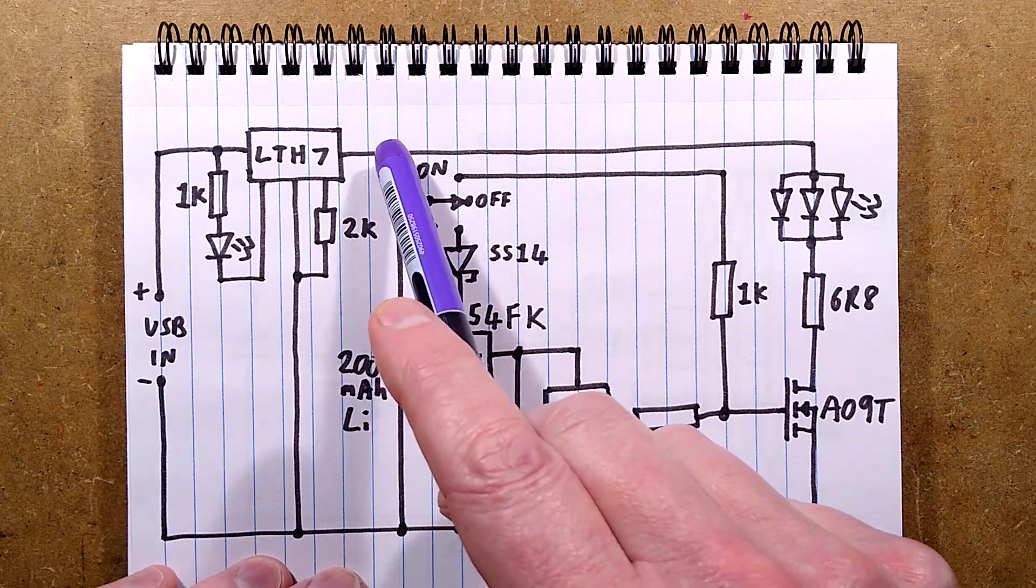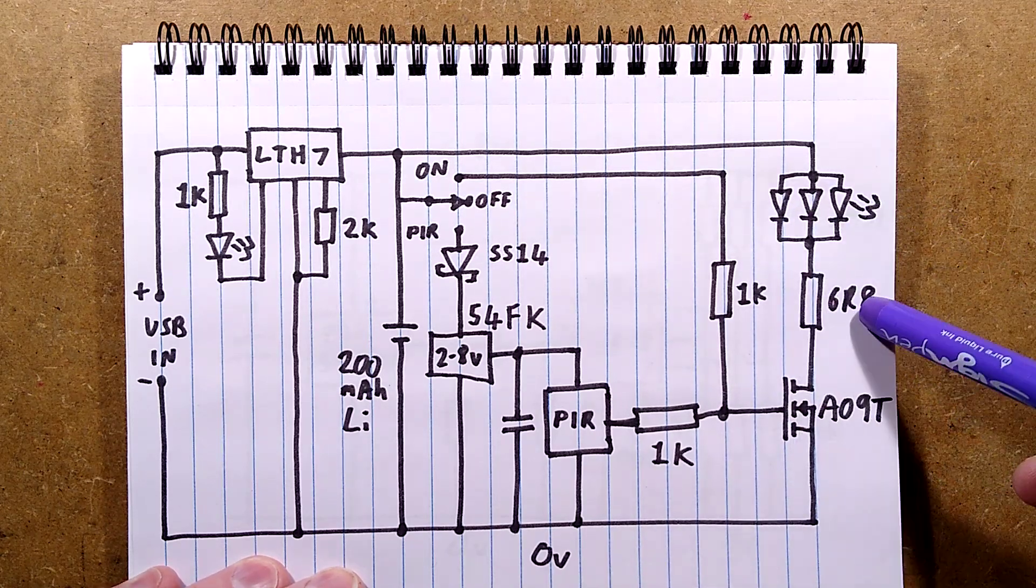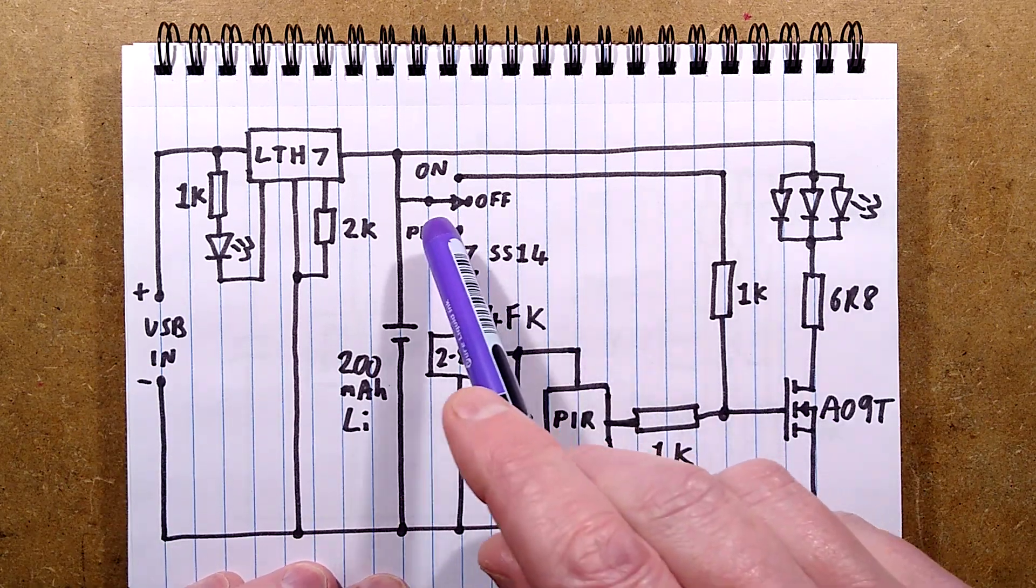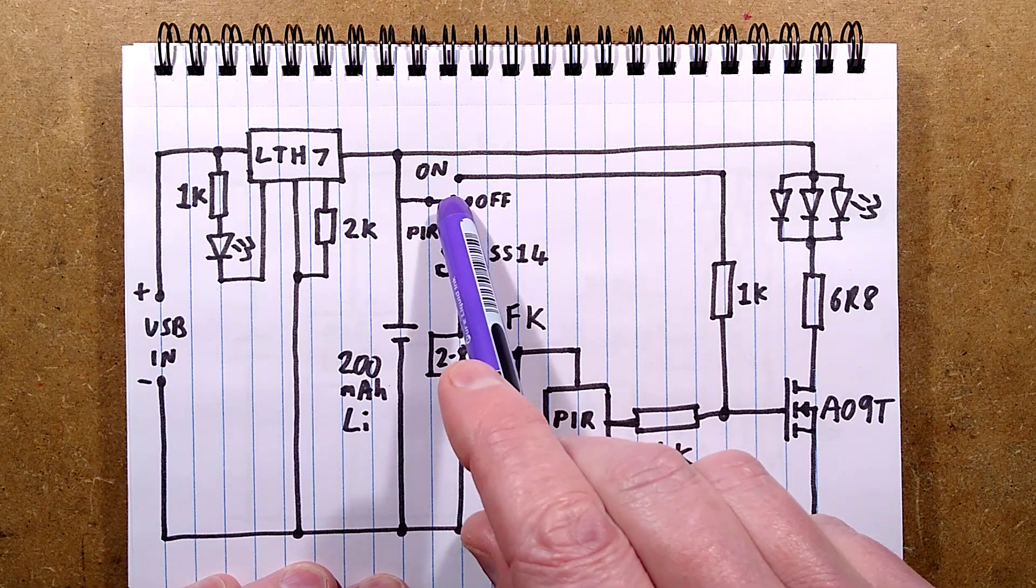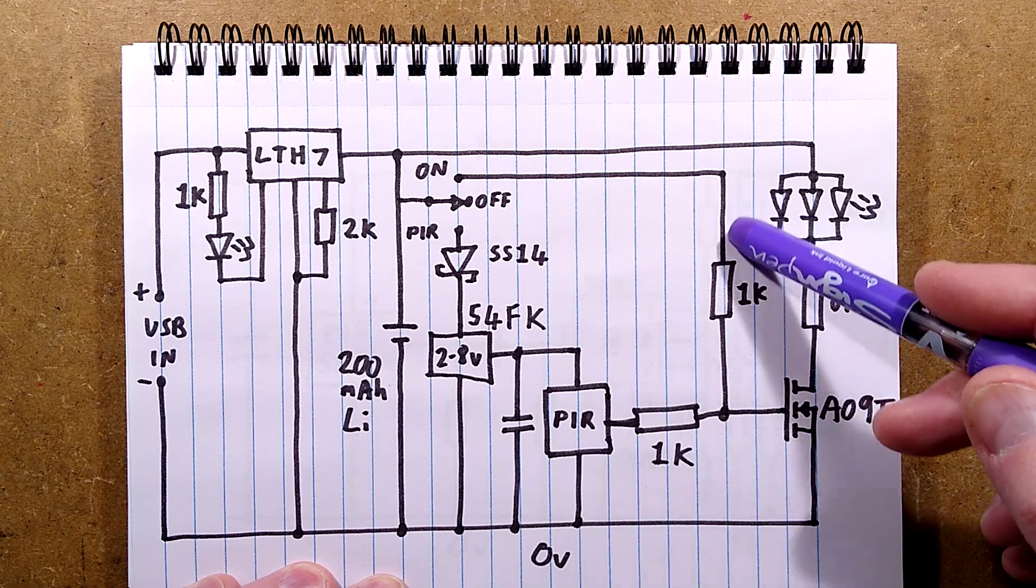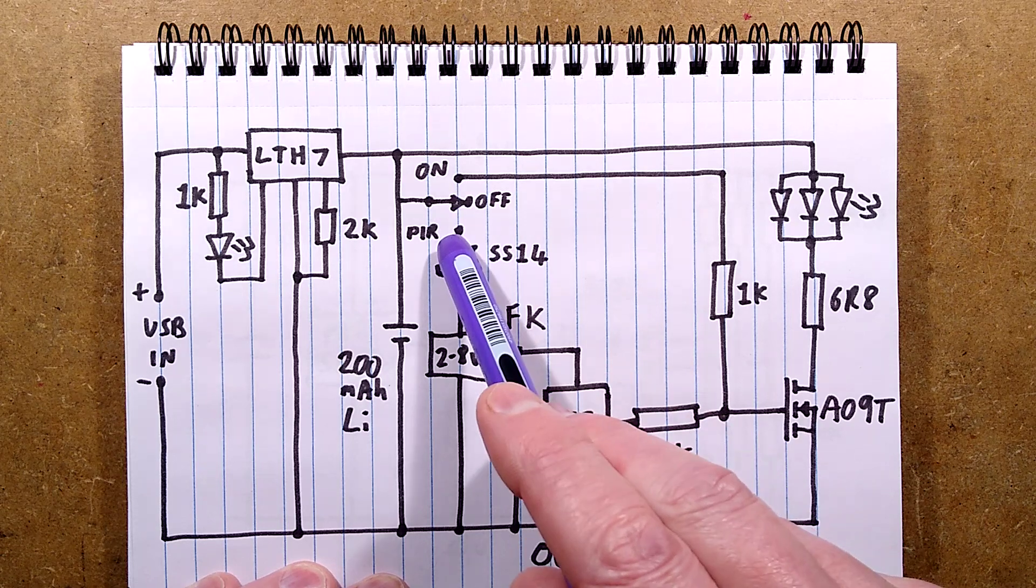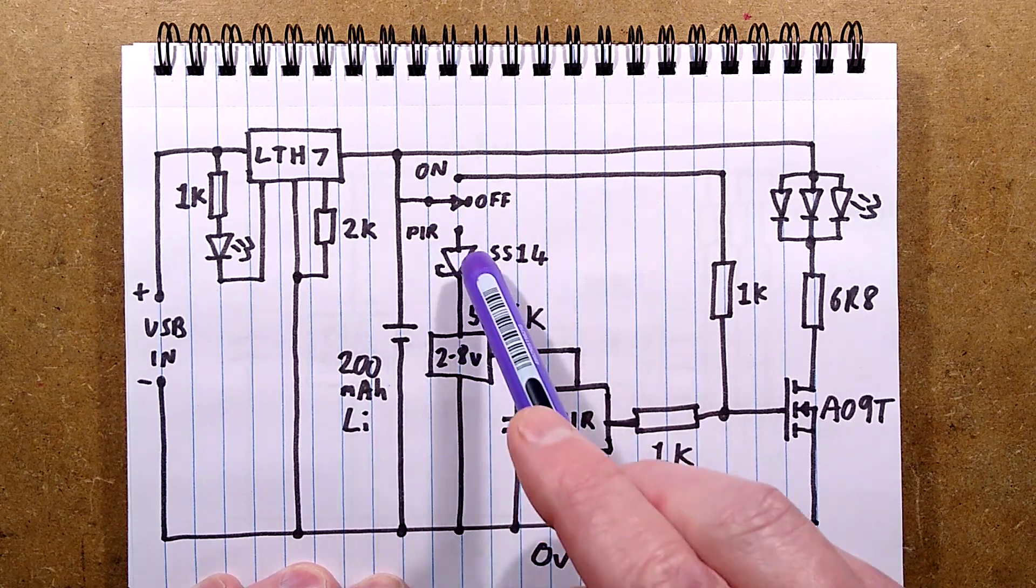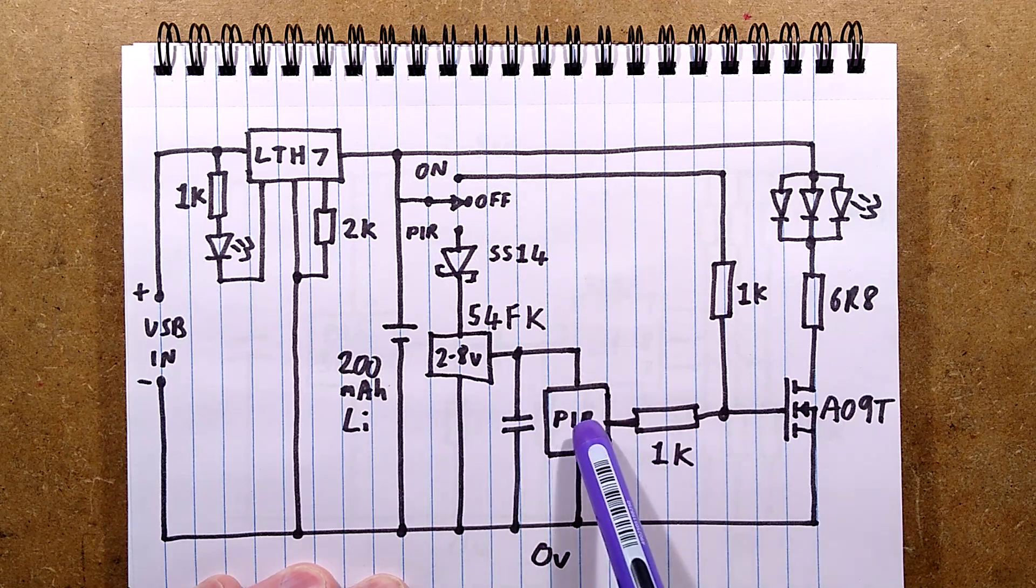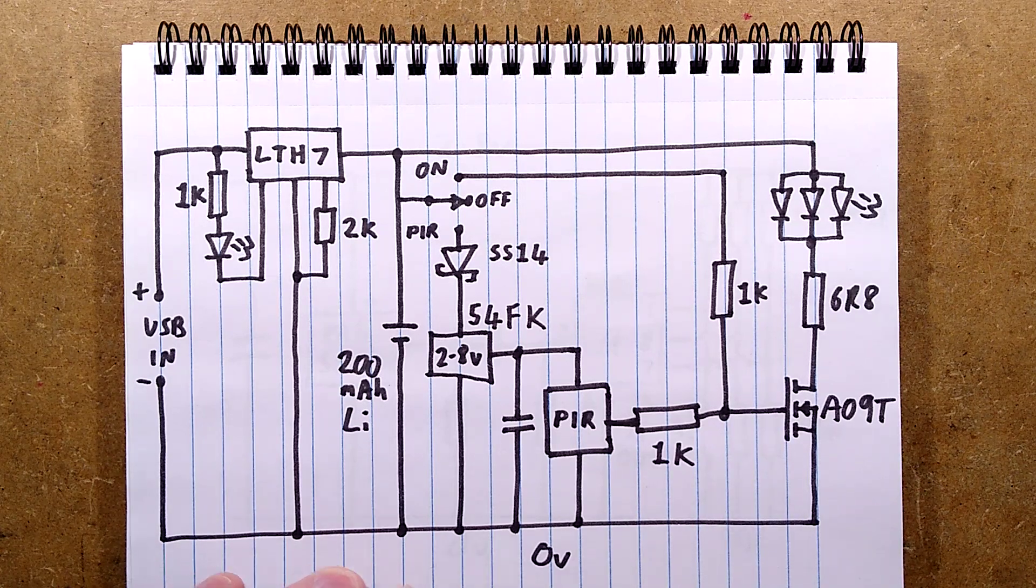The cell goes directly to the LEDs - eight LEDs in parallel, a 6.8 ohm resistor and that MOSFET. Two things can turn that MOSFET on. If you turn the power switch from off to on, it directly powers the MOSFET via a 1k resistor. If you turn it to passive infrared mode, it goes via the Schottky diode to the 2.8 volt regulator and powers the passive infrared circuitry, which can then control that MOSFET. There are three components missing off this PCB.